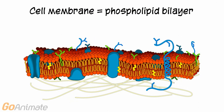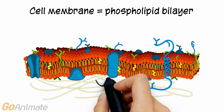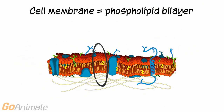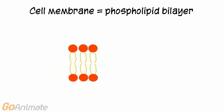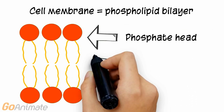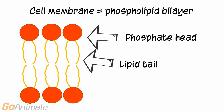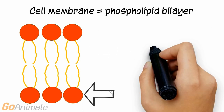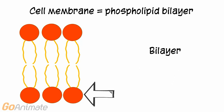The cell membrane consists of a phospholipid bilayer. Phospholipids consist of a phosphate head that loves water, or hydrophilic, and a lipid tail that hates water, or hydrophobic. The phospholipids arrange themselves into a bilayer with the head pointing outward and the tails pointing inward.